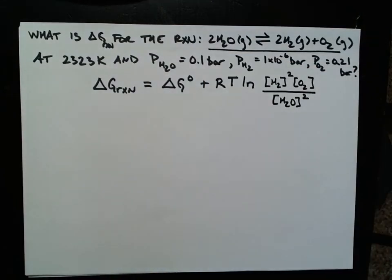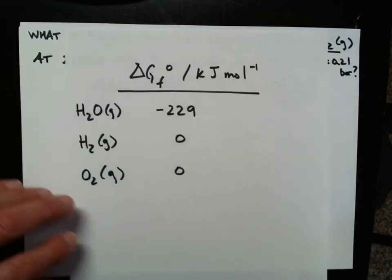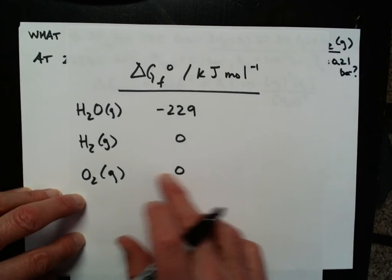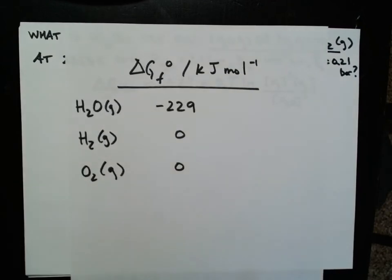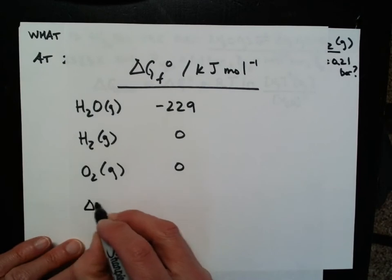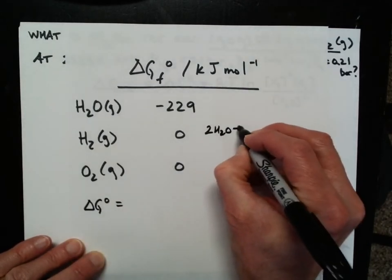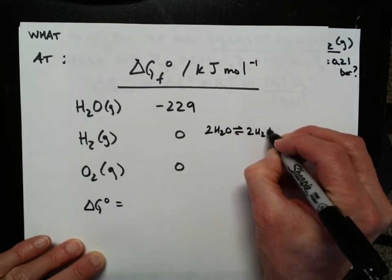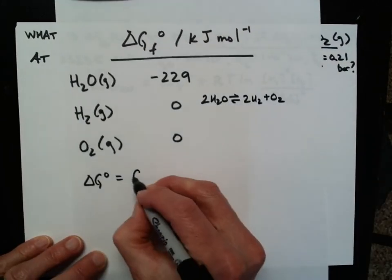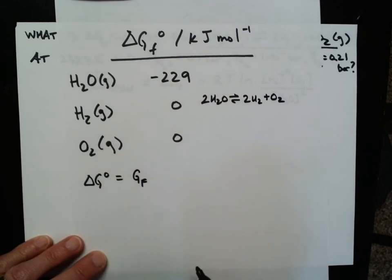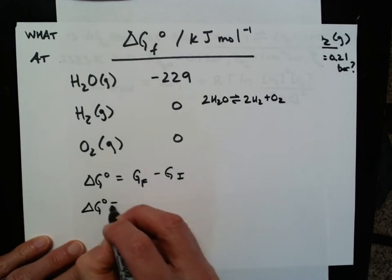So my first step will be to calculate the delta G under standard conditions. So I look these values up in the table in the back of the text, and let's see. I want to calculate the standard delta G for this reaction. Oh, and the reaction you might remember is 2H2O going to 2H2 plus O2. So I want to find the Gibbs energy under the final conditions minus the Gibbs energy under the initial conditions. So what's that going to be equal to?